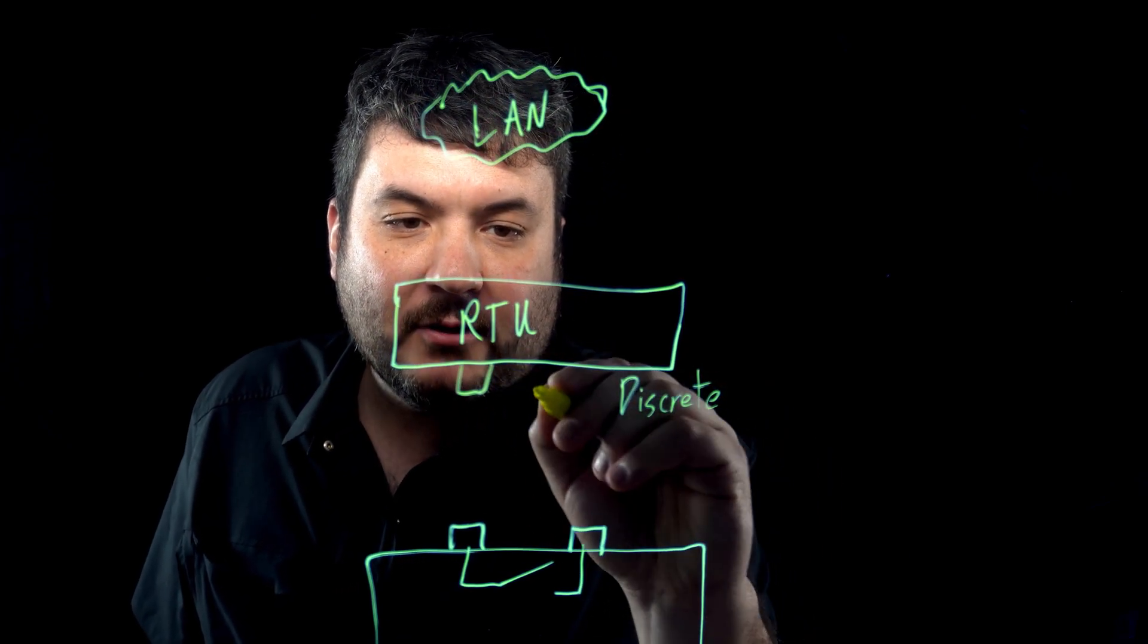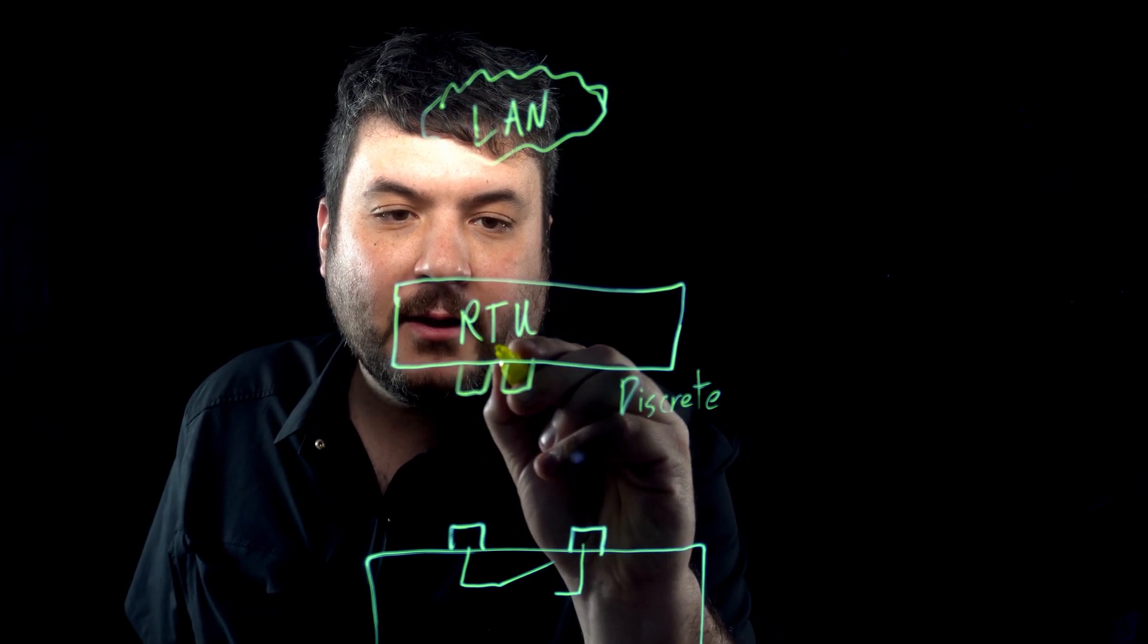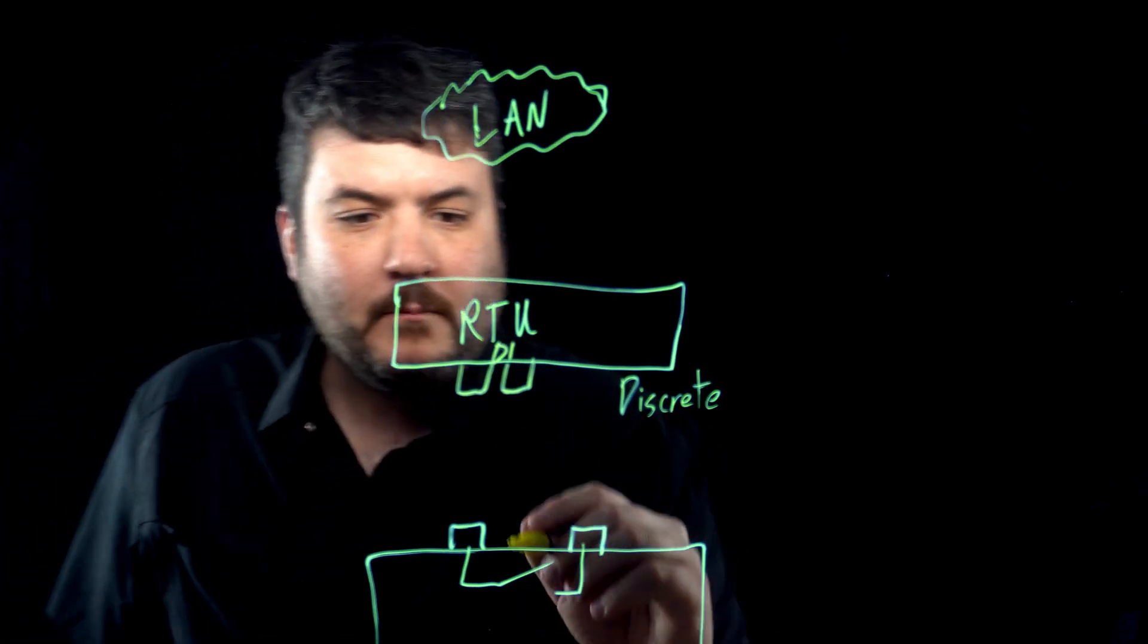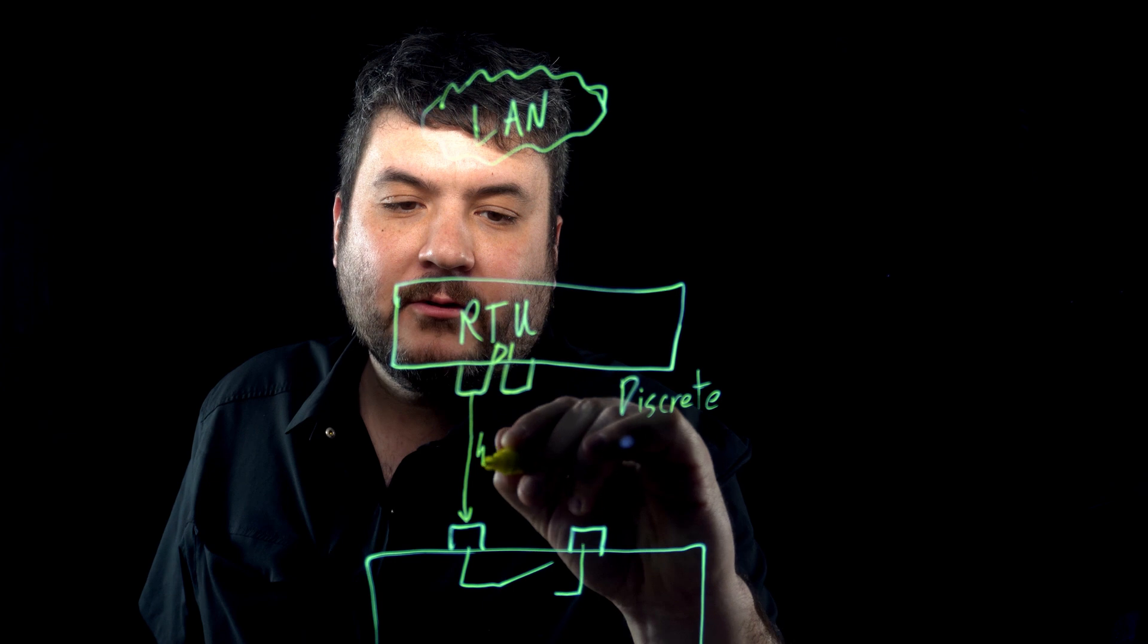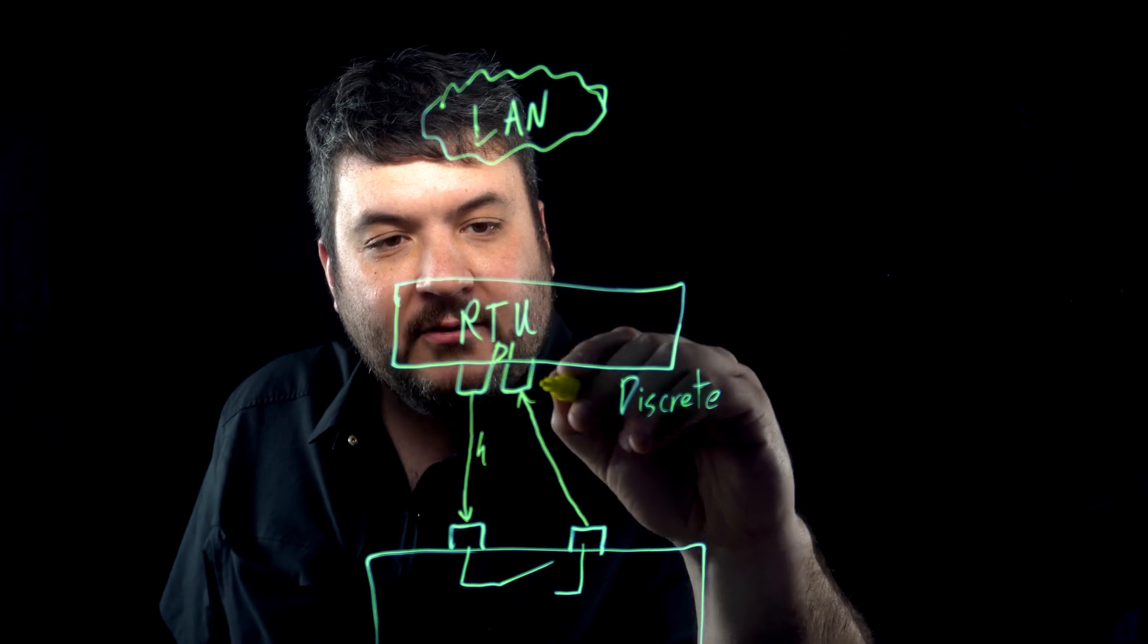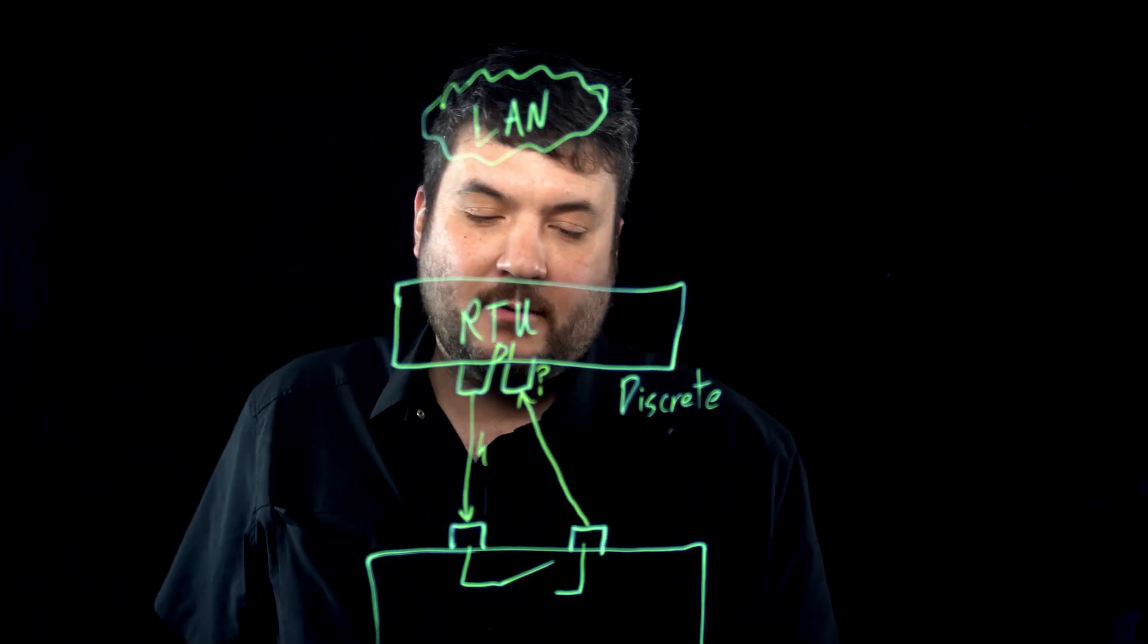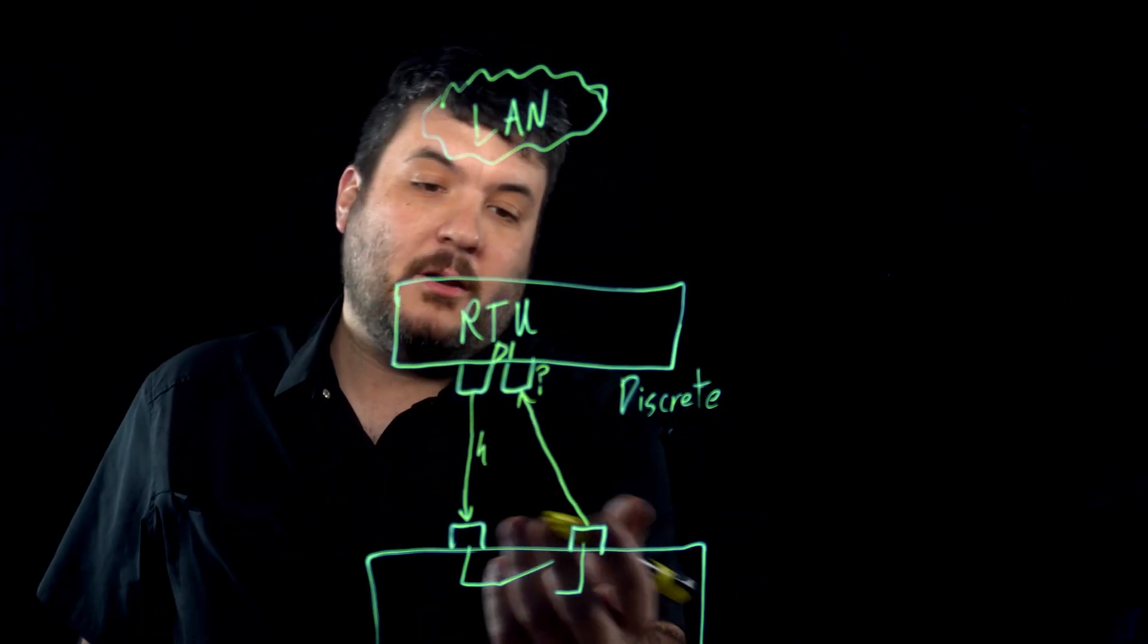So, if we had our first discrete input on this RTU, it might be here. We'll call that, how about D1 for discrete 1. What we're going to do is send a very small electrical charge across a wire there. And then we're going to wire this back. And we're looking to see, do we see anything? If we do have continuity, we know that that relay must be closed. If we don't, we know that it's open.